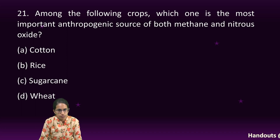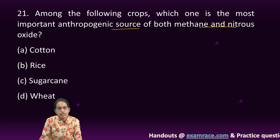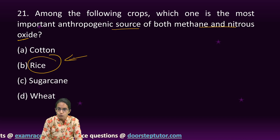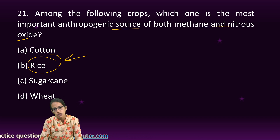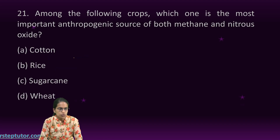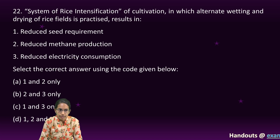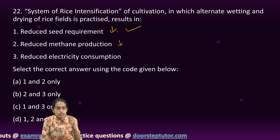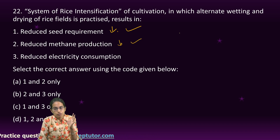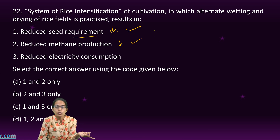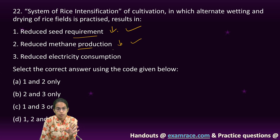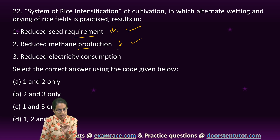The next set of questions are from the section on Geography. The most important anthropogenic source of methane and nitrous oxide among the given crops is rice — specifically wet rice. This is one of the articles covered in Down to Earth magazine, which we have covered intensively. Please check those lectures. Another important question from Down to Earth is on the System of Rice Intensification, which focuses on two important things: reducing the seed requirement and reducing methane production.